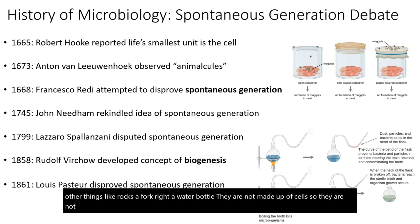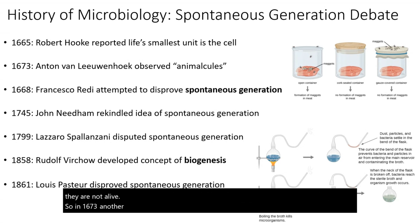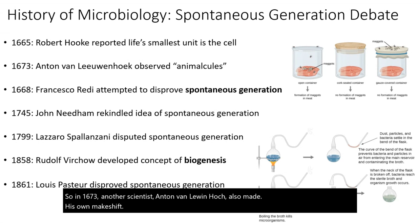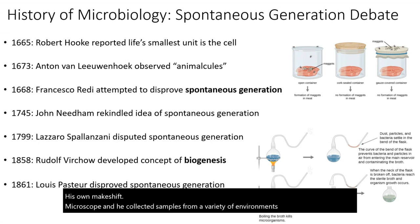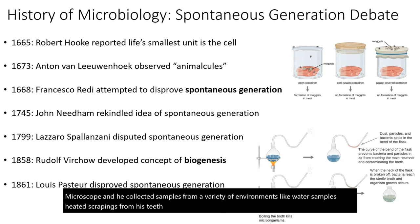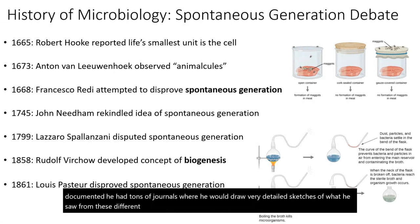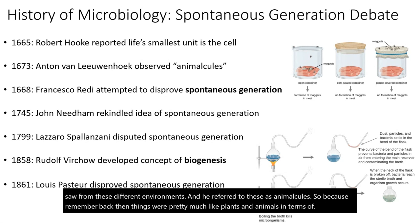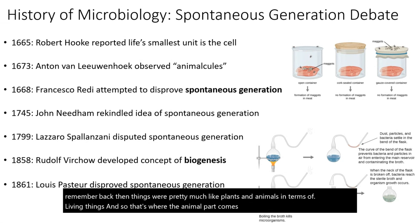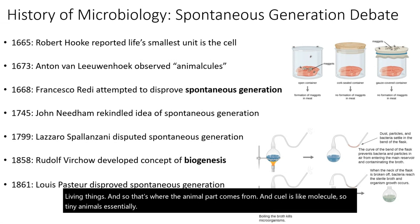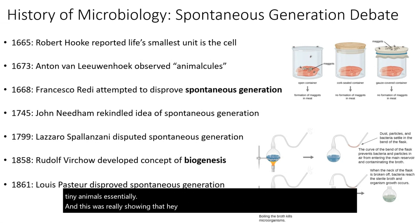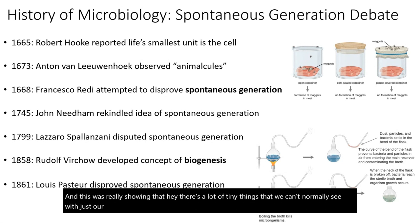In 1673, another scientist, Anton van Leeuwenhoek, also made his own makeshift microscope. He collected from a variety of environments — water samples, scrapings from his teeth, even his own stool samples. He documented everything in detailed journals with sketches of what he saw from these different environments. He referred to these tiny organisms as animalcules — 'animal' because back then living things were thought of as plants or animals, and 'cule' like molecule. So, tiny animals essentially. This really showed there's a lot of tiny things we can't normally see, and there's a lot of diversity.